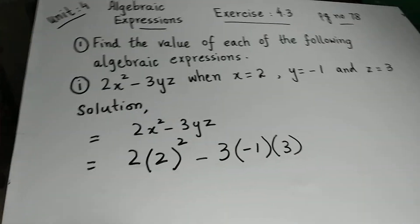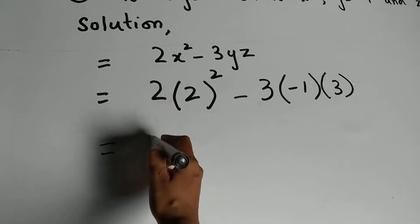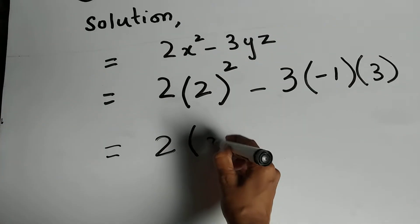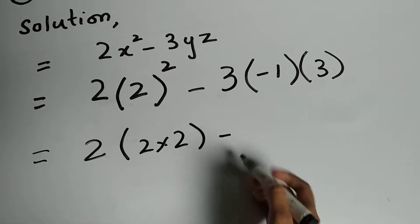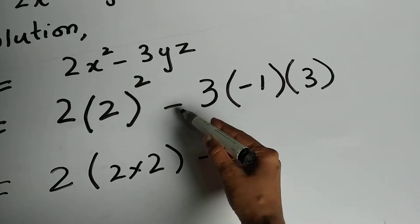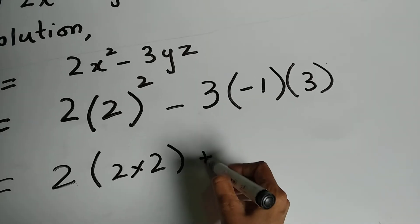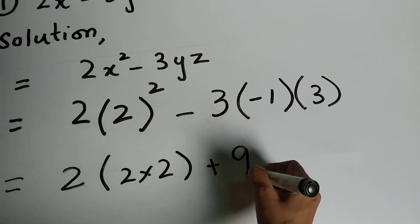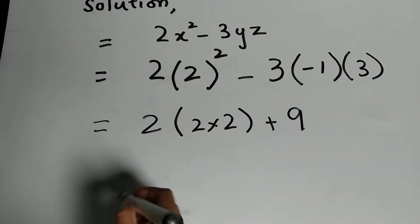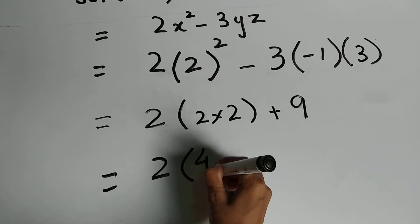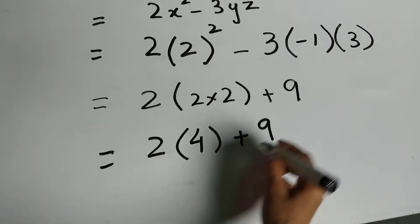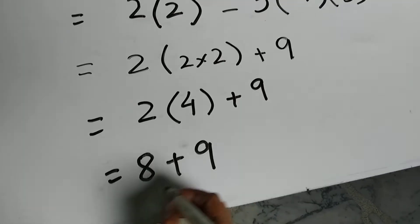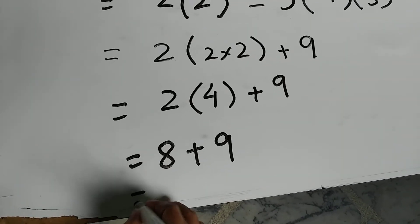Now solving step by step: 2 times 2 multiplied by 2, that is 2 times 4, which is 8. Then minus minus gives plus, and 3 ones are 3, divided by 3 threes are 9. So we get 8 plus 9, which equals 17.